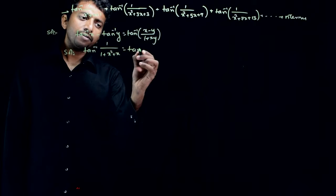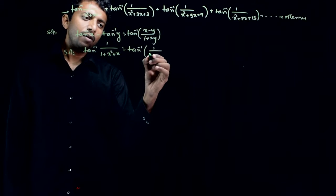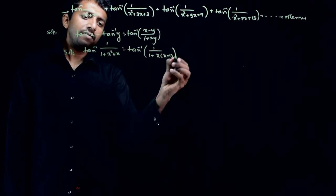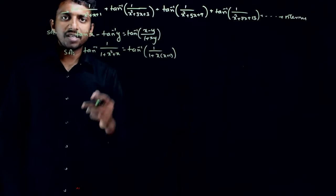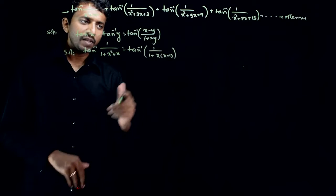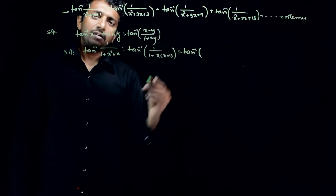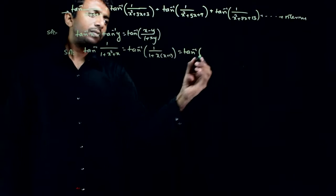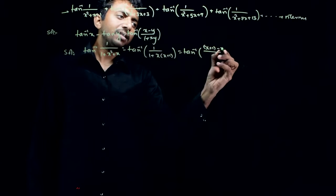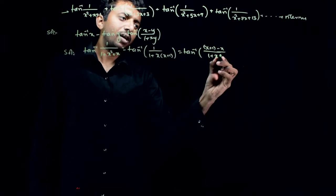We rewrite x squared plus x as x times (x plus 1). So this becomes tan inverse of 1 by (1 plus x times (x plus 1)). Now in the numerator, we can write 1 as (x plus 1) minus x, divided by 1 plus x times (x plus 1).